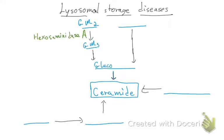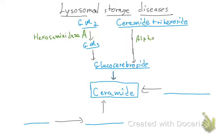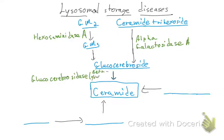Starting the pathway: from GM2, you go to GM3 using the enzyme hexosaminidase A (shown in green). From GM3 you go to glucocerebroside. On the other side, you also reach glucocerebroside from ceramide trihexoside using the enzyme alpha-galactosidase A. Then from glucocerebroside you go to ceramide using the enzyme glucocerebrosidase, also known as beta-glucosidase.